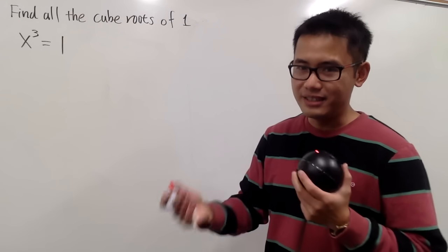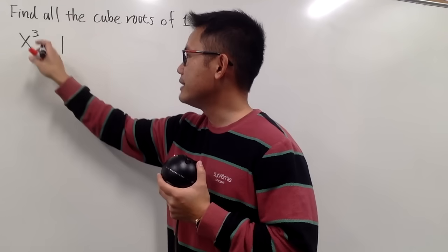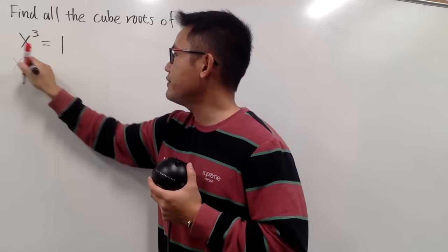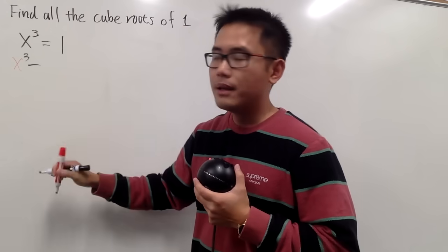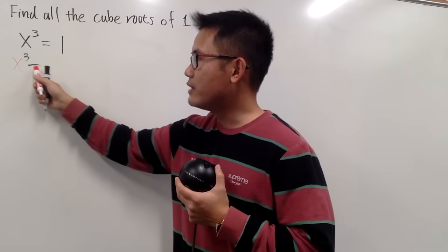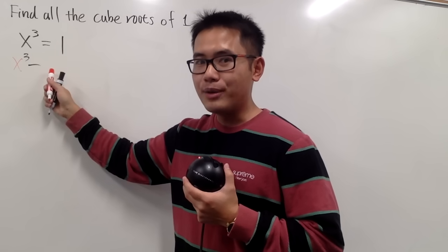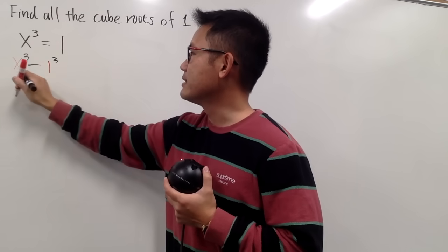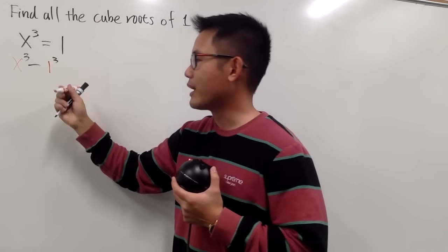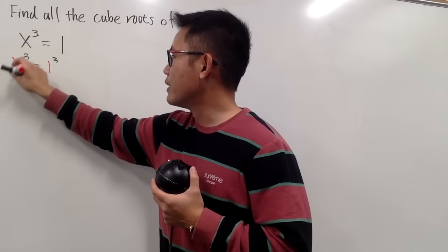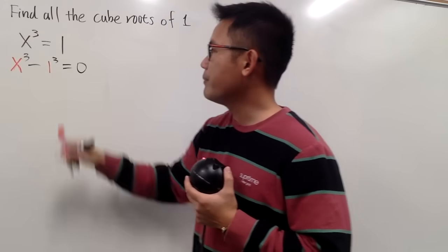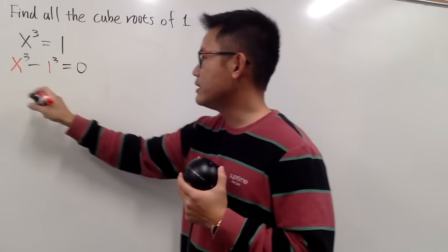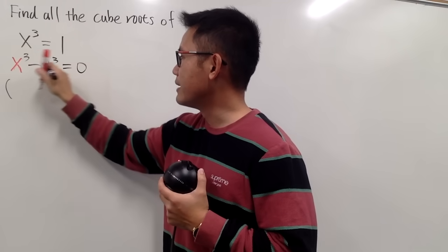To find the other solutions, we subtract 1 from both sides, so I will have x to the third power minus 1. This is going to be a difference of a cube, and I'm going to put 1 as 1 to the third power as well. So I can look at this as a difference of two cubes, equal to 0. Now we can factor this out. The first factor is x minus 1.